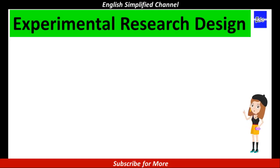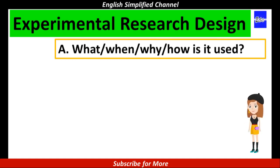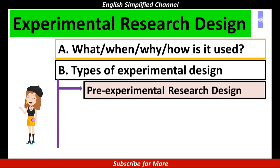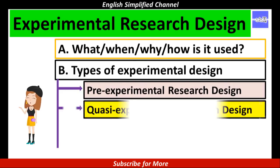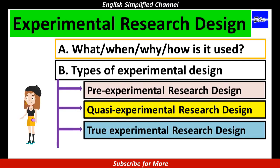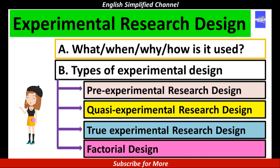This topic is discussed under the subtopics: Part A — what, when, why, and how experimental design is used. Part B — the types of experimental research design, such as pre-experimental research design, quasi-experimental research design, true experimental research design, and factorial design. These types of experimental research design will be discussed in detail. Are you ready to rock? Let's get started.